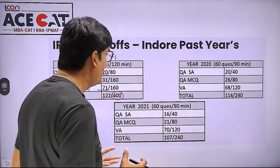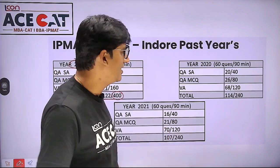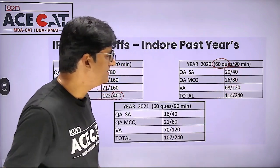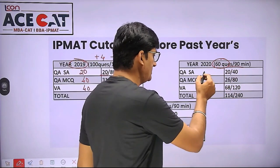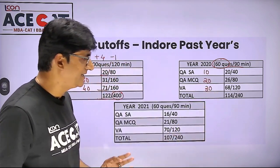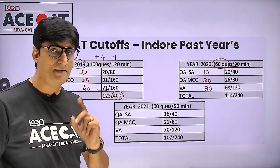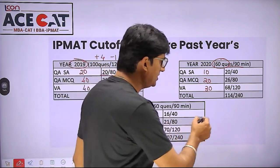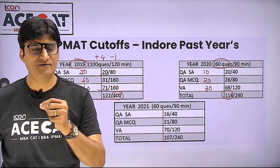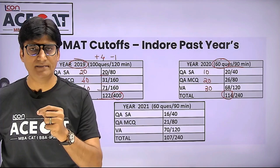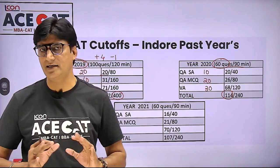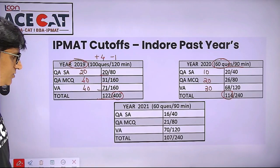Coming to 2020 — that was the first year of the COVID pandemic, and the paper pattern changed significantly. IPMAT became 60 questions total with 90 minutes: 10 short answer questions, 20 MCQs, and 30 questions from English. Marking pattern same — +4 and -1. The overall cutoff was 114 out of 240, with section-wise cutoff marks also provided.